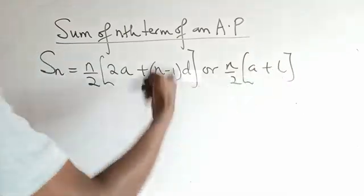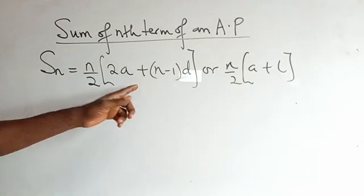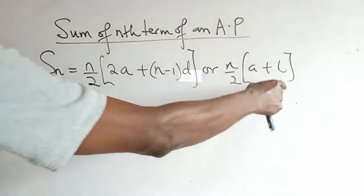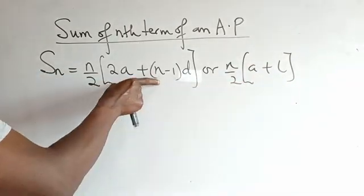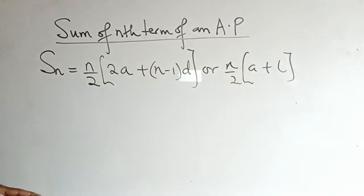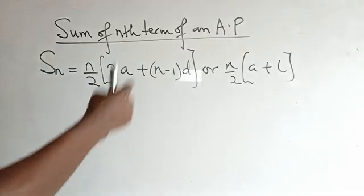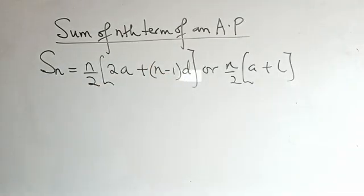That second form is used if the last term is given in that progression. You can use either formula: if the last term is given, use Sn = n/2(a + l); if the last term is not given, use Sn = n/2(2a + (n−1)d). You will observe that this is closely related to AP, as some of the parameters are the same — a is the first term and d is the common difference.